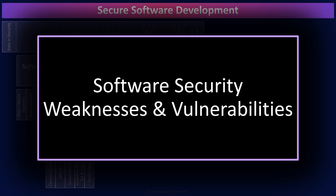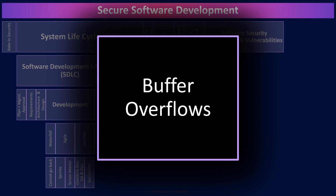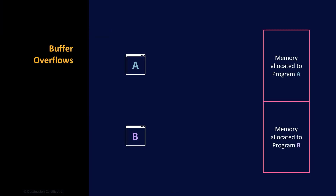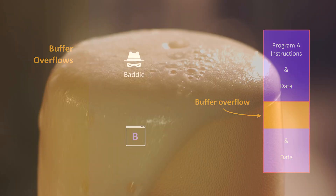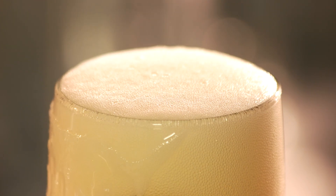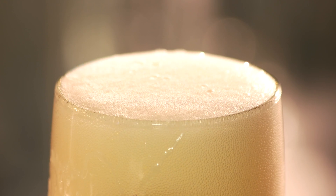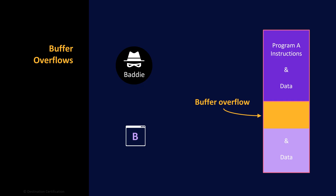We need to ensure we put controls in place to avoid vulnerabilities while developing software, and tests we conduct to detect them during the development and operational phases. A buffer overflow is a condition where a program, while writing data to a buffer in memory, overruns the buffer's boundary and overwrites data into an adjacent memory location. Put more simply, a program attempts to write a chunk of data to a buffer, and the chunk of data is larger than the buffer. To protect against buffer overflows, code should always be written to perform parameter or bounds checking, to never allow a chunk of data to be written to a buffer that is larger than the buffer.